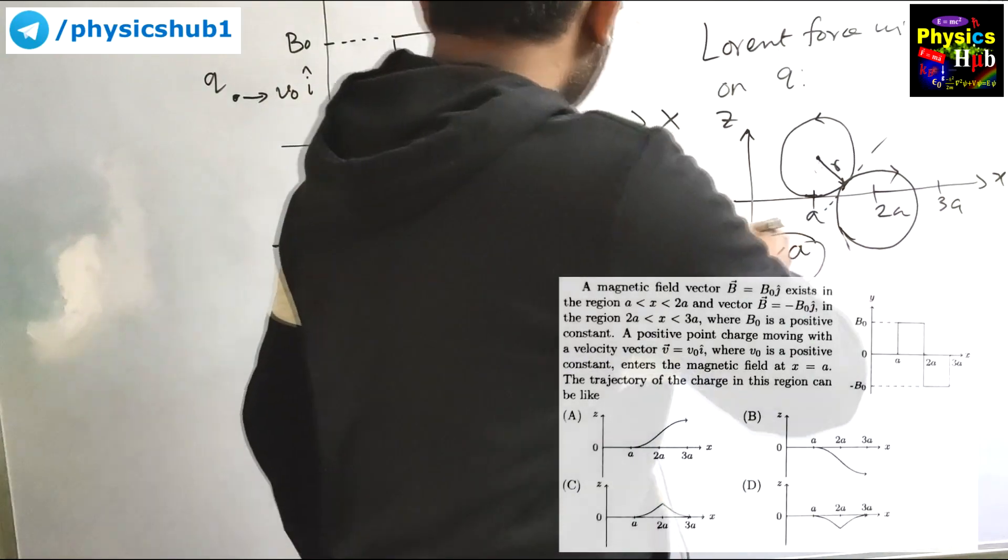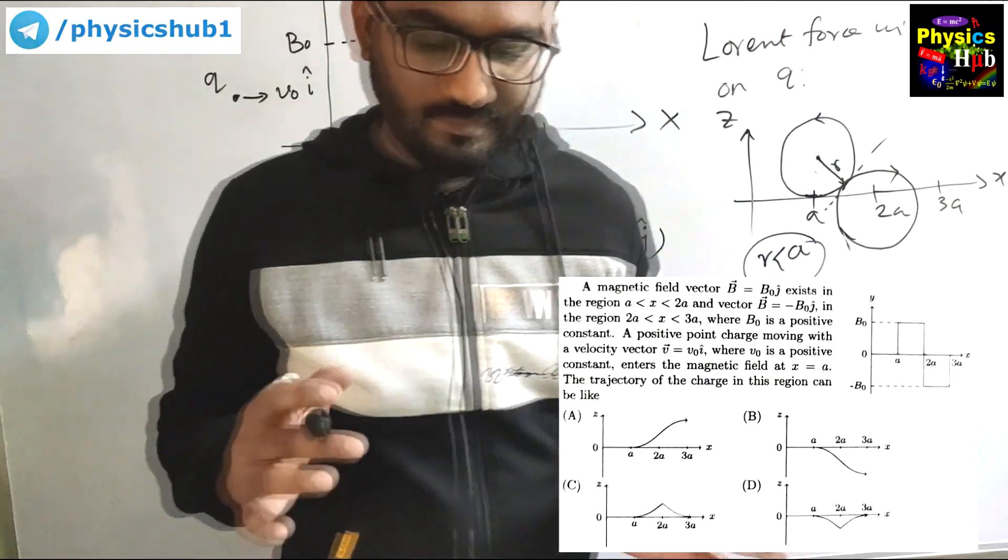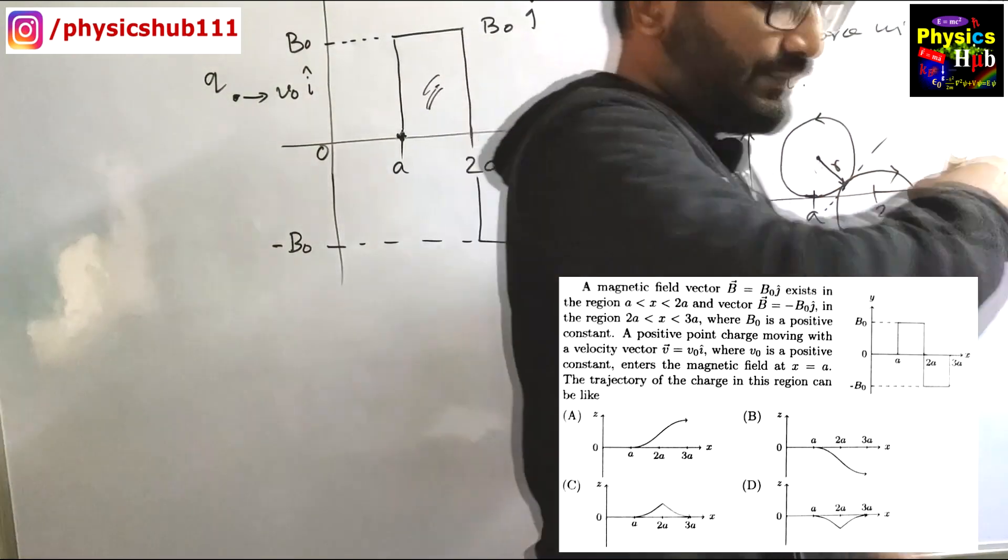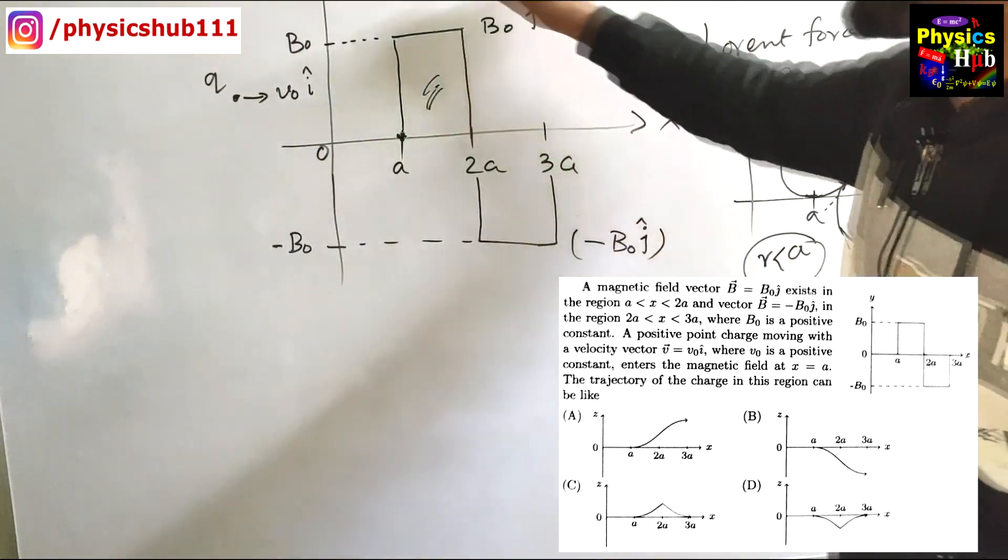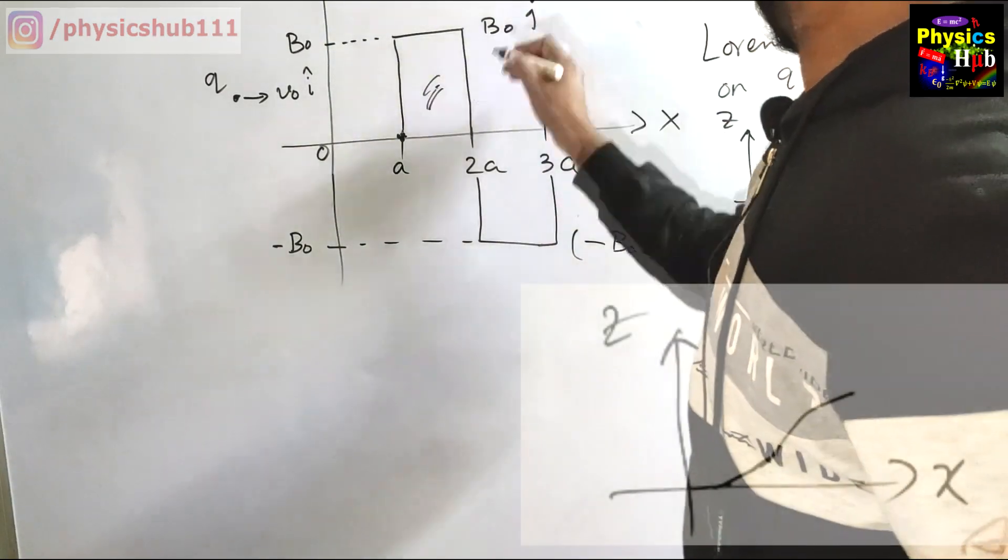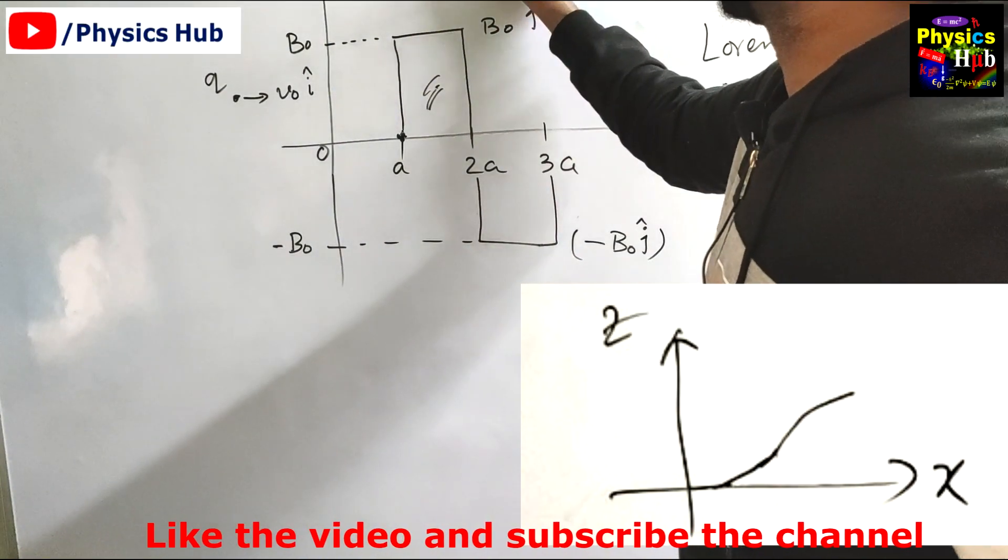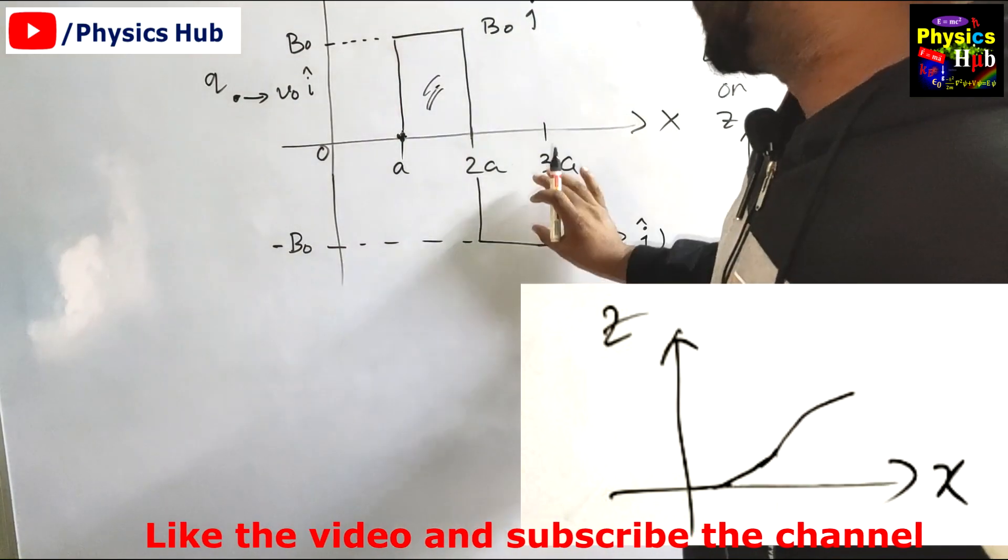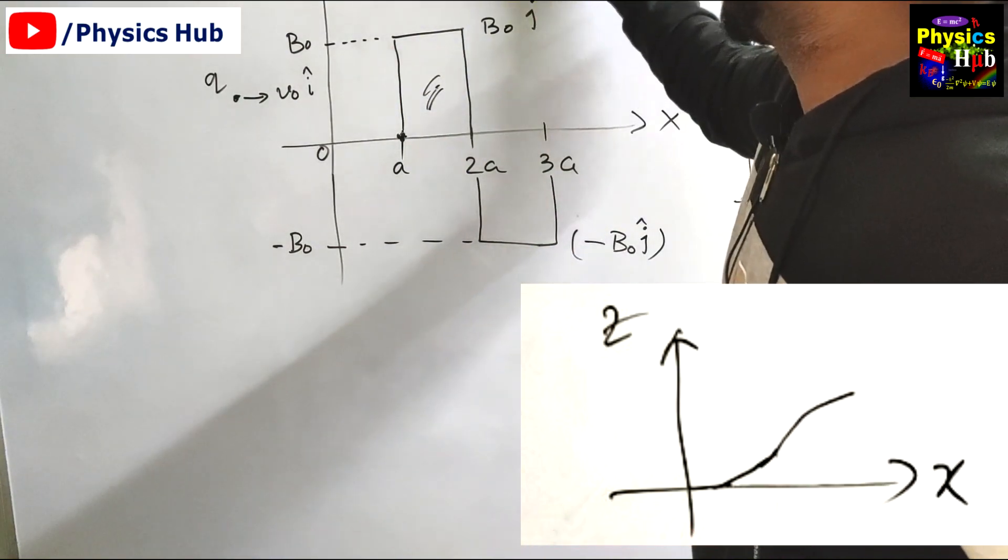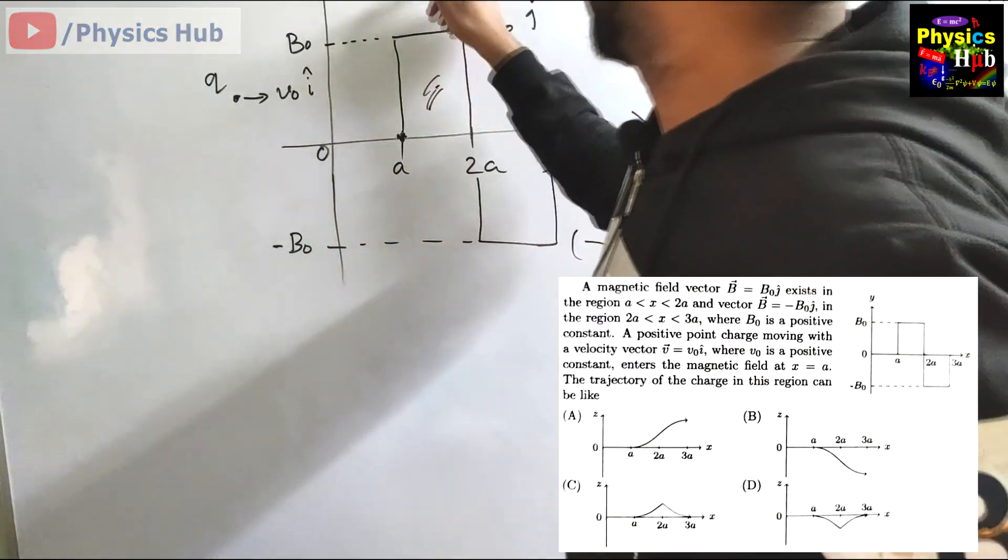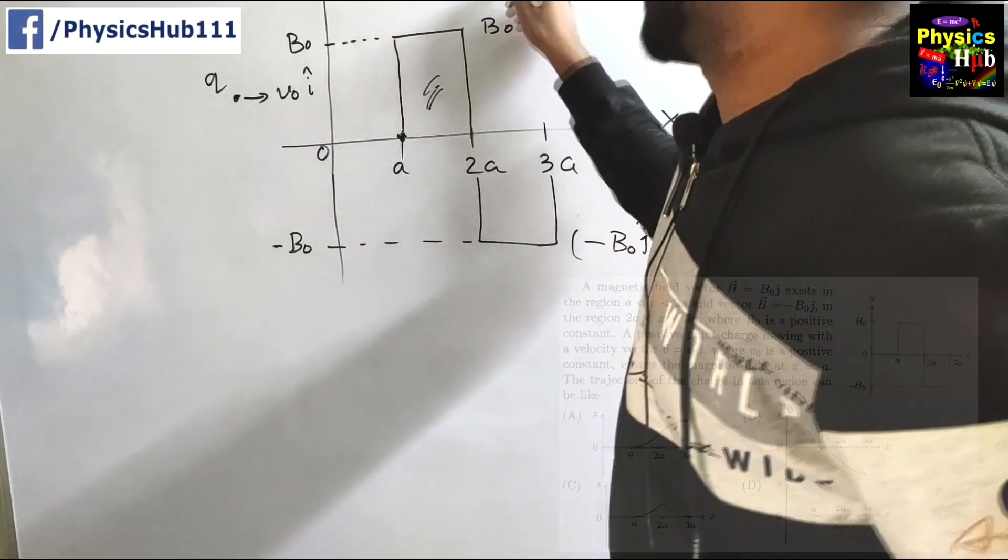You can see the first graph is matching with this kind of trajectory. Effectively it is giving us a trajectory like this if you plot it along z axis and x axis. It is trying to make a circle here but because of this lower magnetic field it is going like this. This is the correct trajectory so option A is the correct option for this question.